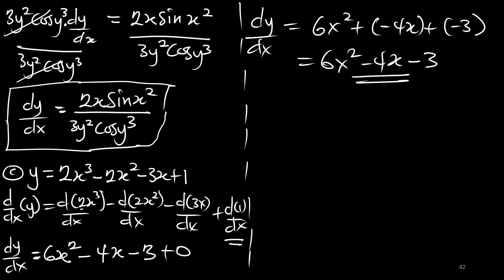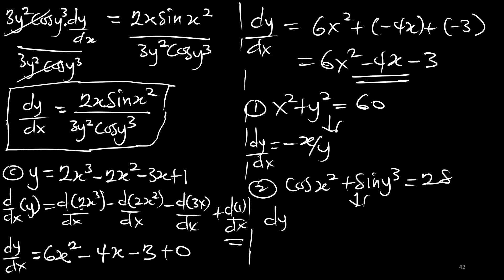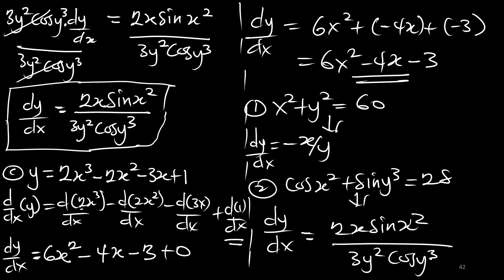To recap: for x squared plus y squared equals 60, the derivative dy/dx is negative x over y. For cos(x squared) plus sin(y cubed) equals 28, the derivative dy/dx equals 2x · sin(x squared) over 3y squared · cos(y cubed). The last part gives dy/dx equals 6x squared minus 4x minus 3. Thank you for watching this episode — this is the first tutorial set. Check out the next set and please subscribe to the channel.